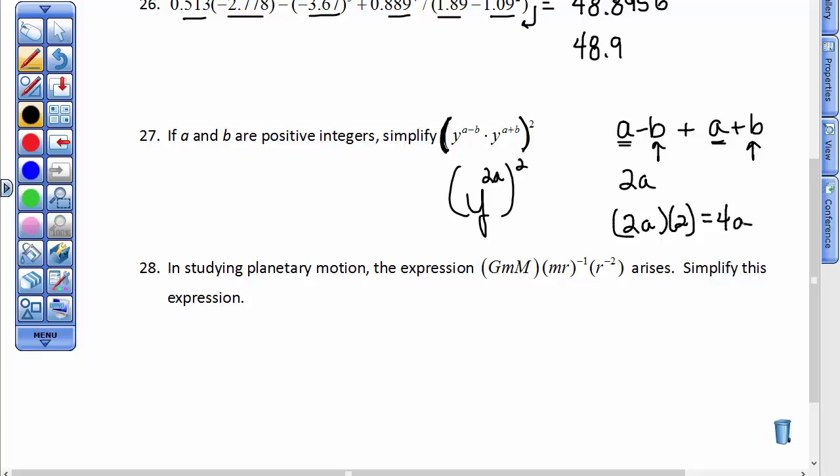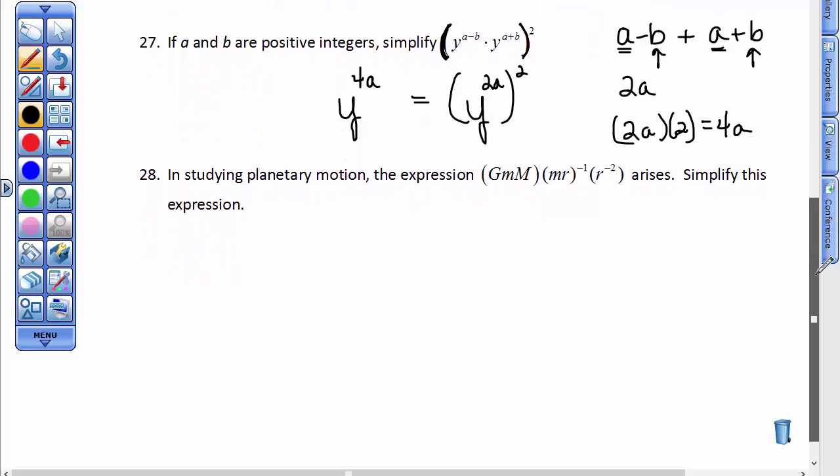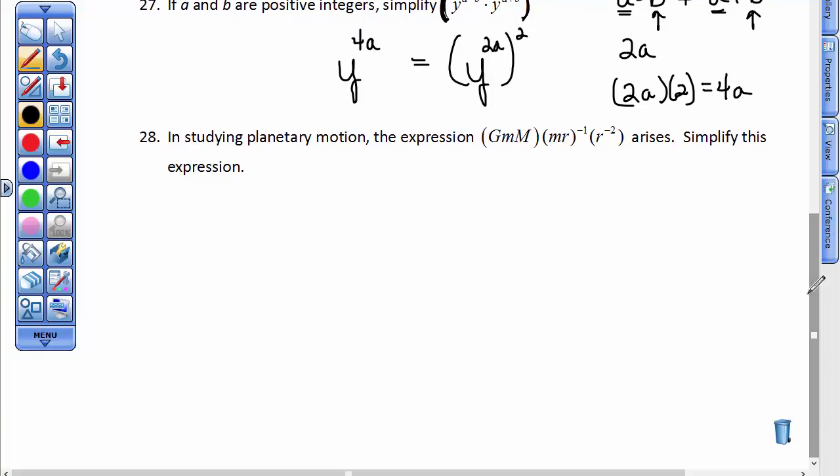So 2a times 2 is just 4a. So the answer to this problem is, finally, y to the 4a power. Pretty simple problem, but it sure looked crazy when we started. Let's look at this next one. In studying planetary motion, this expression sometimes arises.